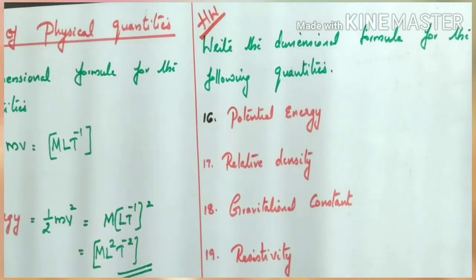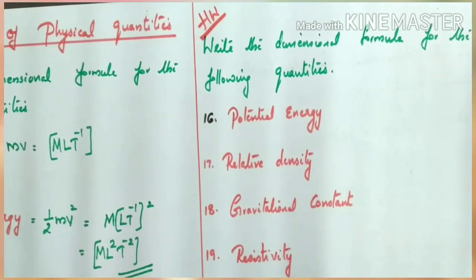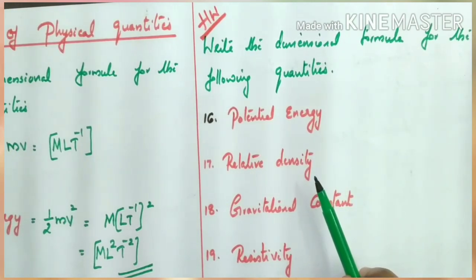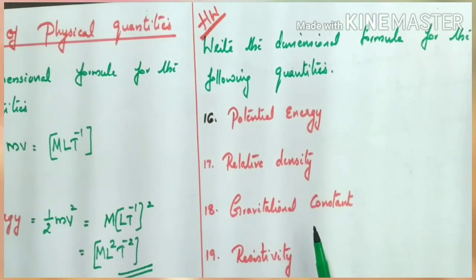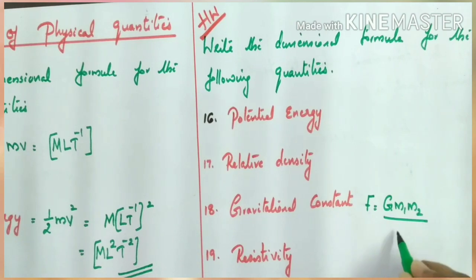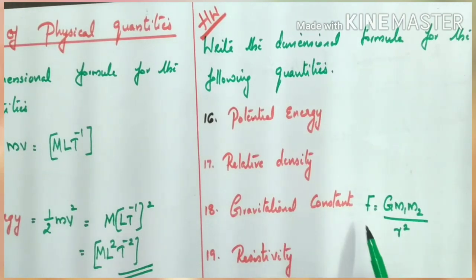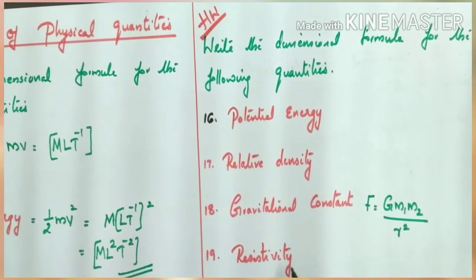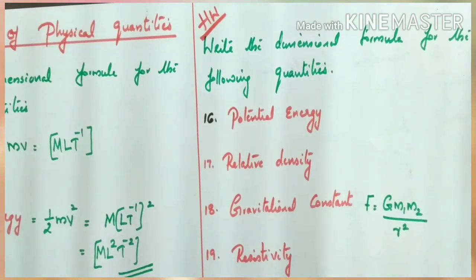Now, dear children, find the dimensional formula for these physical quantities as homework: potential energy, relative density, and gravitational constant. For gravitational constant, the clue is: gravitational force F = Gm₁m₂/r², where G is the gravitational constant, m₁ and m₂ are masses, and r is the distance between them. Also find the dimension of resistivity, which you have studied in 10th standard.